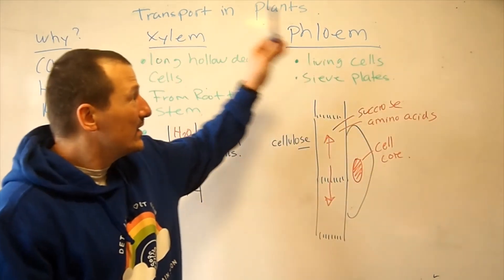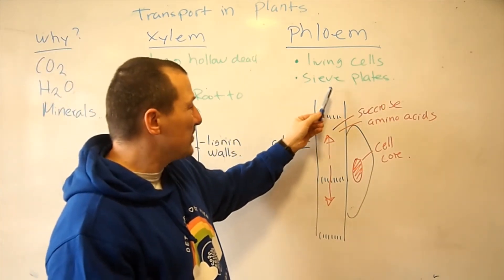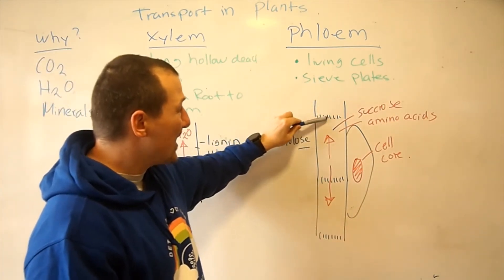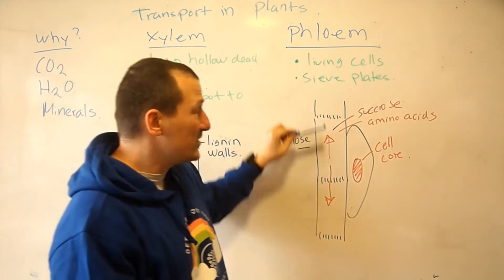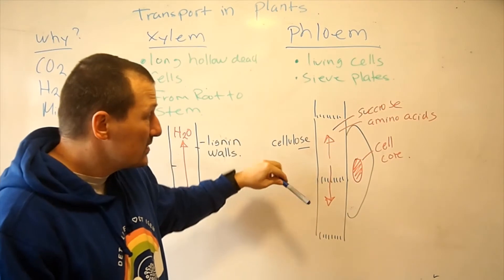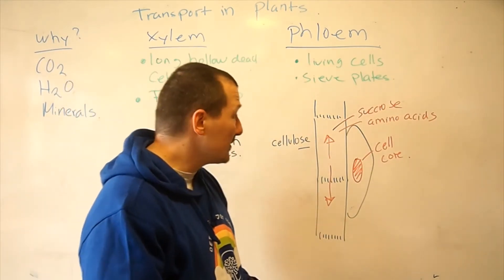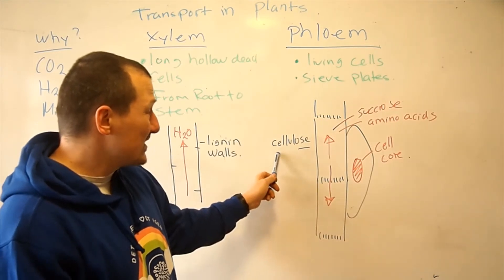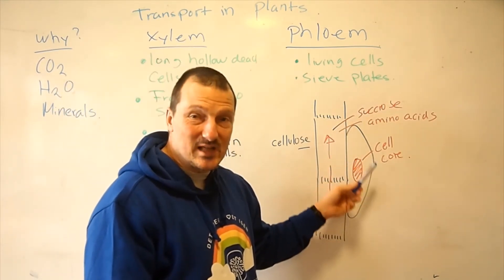Our other system is the phloem. The phloem are living cells still, and they have what we call sieve plates, where it has a cell and it has like a plate with holes in it where they can transport materials over it. So it's still these long structures that go through the plant, but it's living, it has no cell walls of lignin, and it has next to it a cell with a cell core.